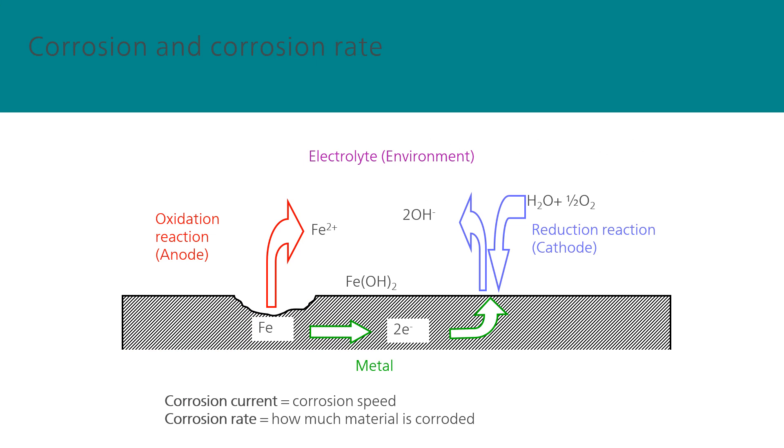When there is corrosion on a metal sample, in this example, iron is oxidized into iron 2+, and two electrons are released in the iron sample. This is called the anodic reaction. On the cathodic side of the metal sample, these two electrons are used for the cathodic reaction.